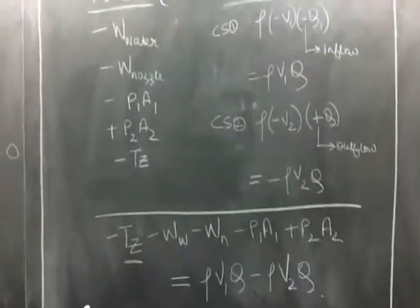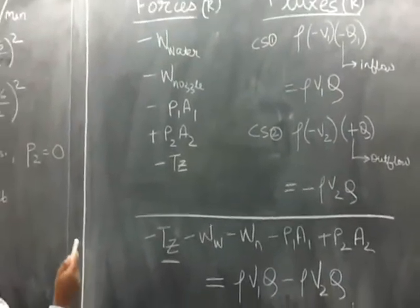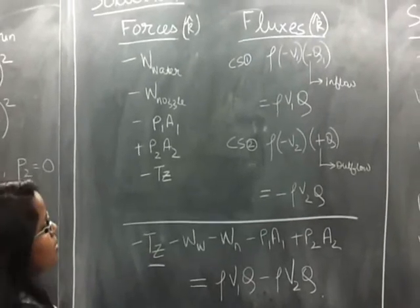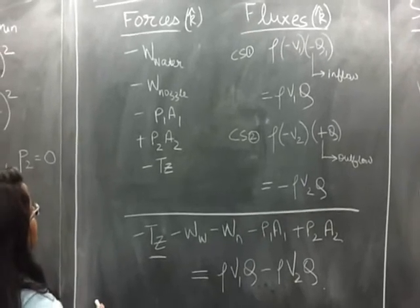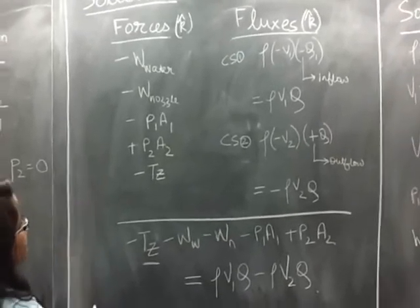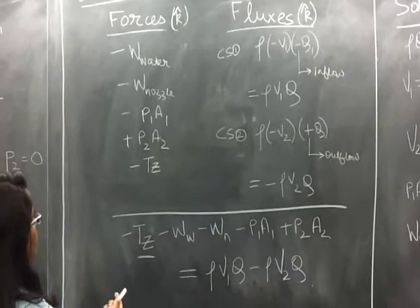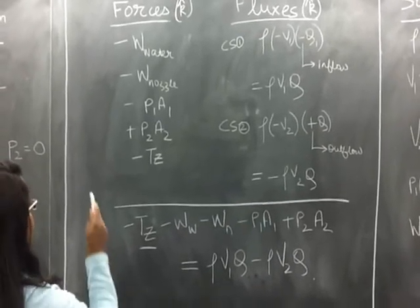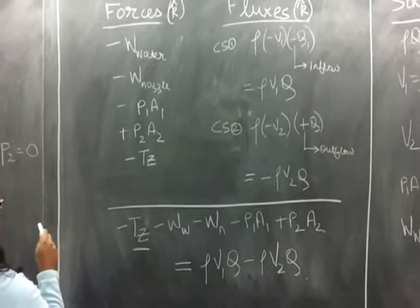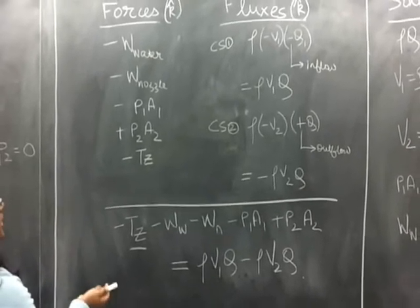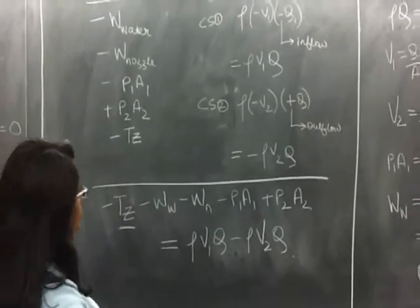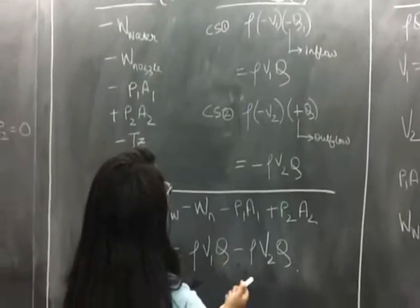Next, we consider the forces on the control volume and write them in vector form. We just have forces and fluxes in the K direction because we don't have anything in the I direction. We started with listing our body forces: the weight of the water and the weight of the nozzle, both negative because they're acting downward. Then we have P1 times A1, which is negative because it's acting in the negative direction, and P2 times A2 is positive because it's acting in the positive direction, as you can tell from our picture. Then we have our support force, which is negative because it's also acting downward.